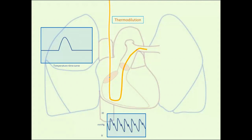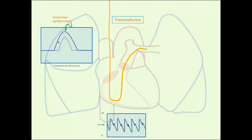Now contrast that with a very sluggish, poor cardiac output. The cold saline slowly moves and washes across the thermistor very slowly, producing a drawn-out change in temperature over time. This increase in area is again inversely proportional to cardiac output—that represents a diminished cardiac output.